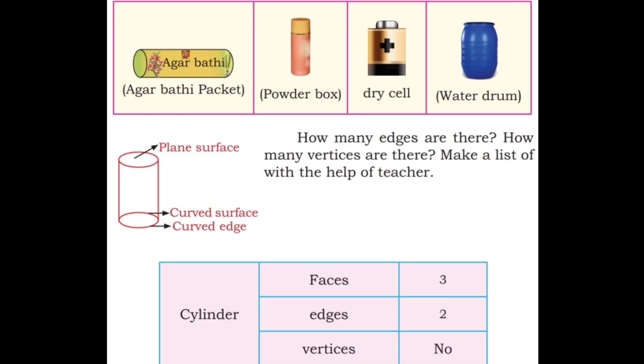Another solid shape is cylinder. This glass is in a cylinder shape. This has three faces — front one and the two circular ends. It has three faces. There are two curved edges — one curved edge at the top and another curved edge at the bottom. This cylinder has no vertices. Examples: agarbatti packet, powder box, dry cell, water drum — these are in the cylindrical shape. A cylinder has three faces, two edges, and no vertices.